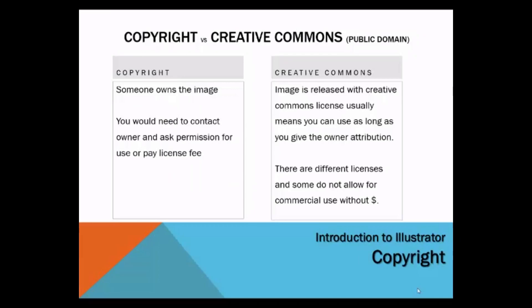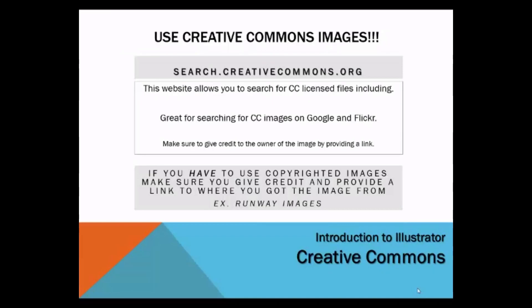Copyright and Creative Commons are licenses used for images that dictate ownership and usage. You will need to use Creative Commons files in your projects. When you work on your projects for this class, make certain to write down the URL address for the images so that you can list the images and where you got them from. To find Creative Commons images, go to search.creativecommons.org, which allows you to search either Google or Flickr for images that you can reuse.